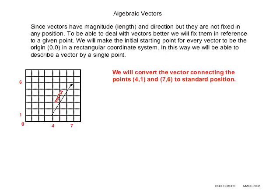We will convert the vector connecting the points (4,1) and (7,6) to standard position. So we want to move that vector that's in the drawing over so that it starts at (0,0). You can kind of think about how you would do that. How would that change those coordinates if you wanted the first coordinate to be (0,0) instead of (4,1)?